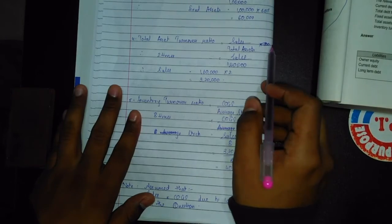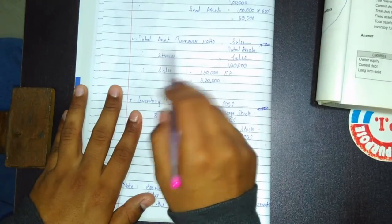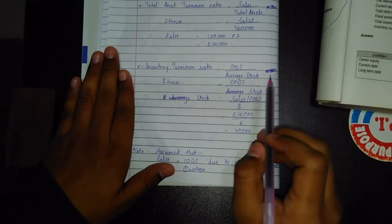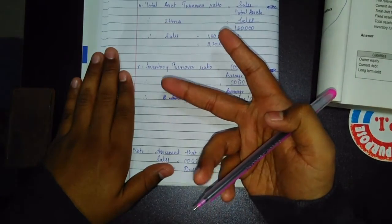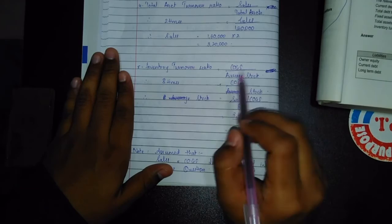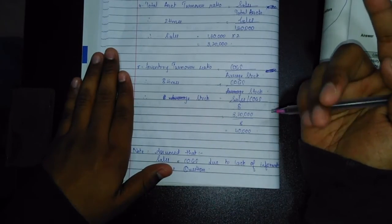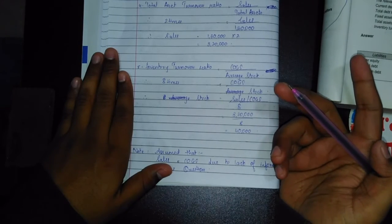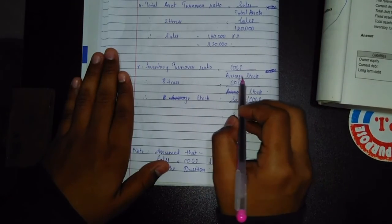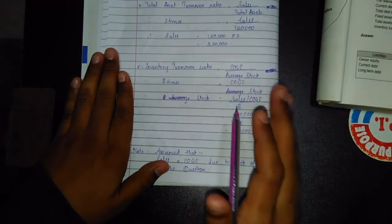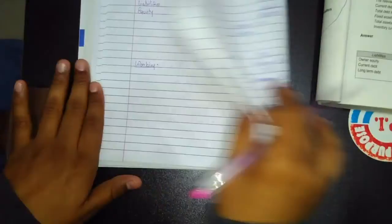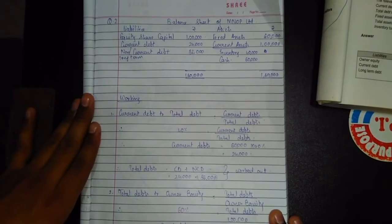We remove the 100 because the ratio is given in times, not percentage — if they gave percentage, we would include 100. Regarding average stock: we write only 'stock' when only one year's data is provided, since average requires more than one year. Even if you write average stock and divide by 1, you still get 40,000. Please pause the video and copy your work.